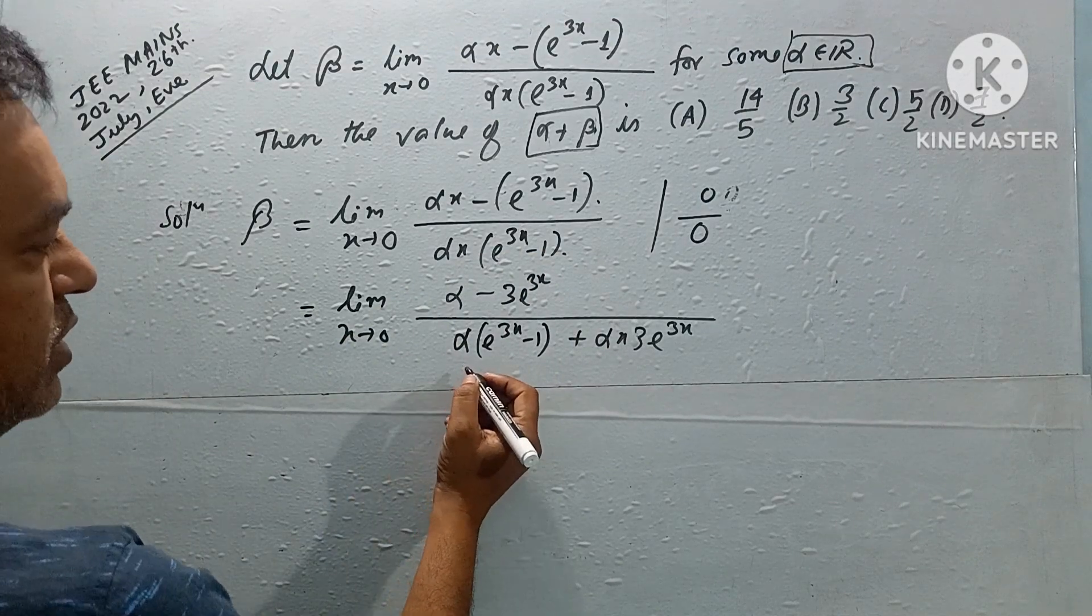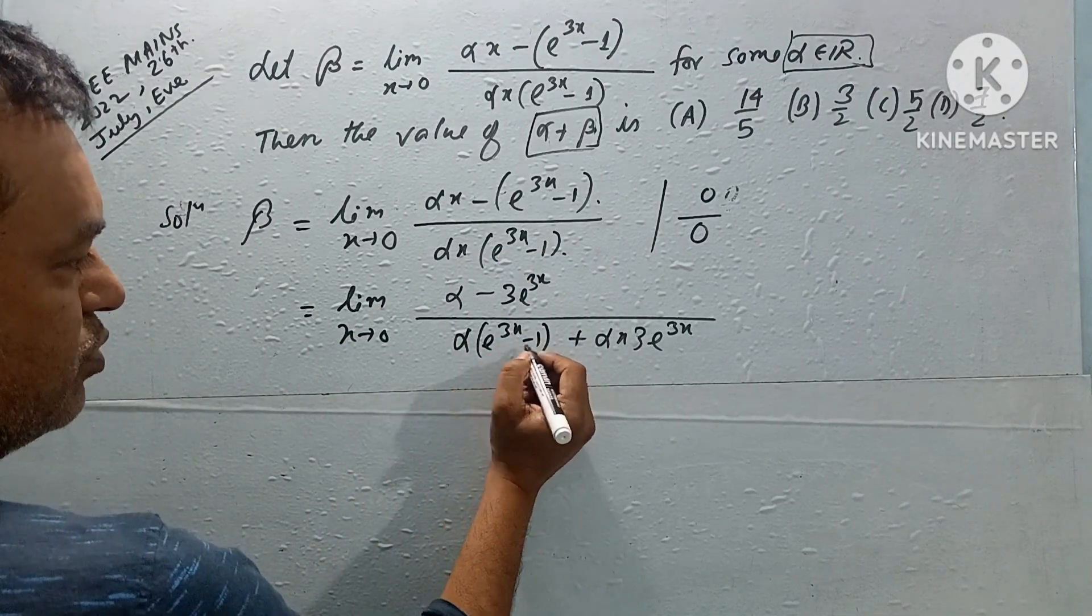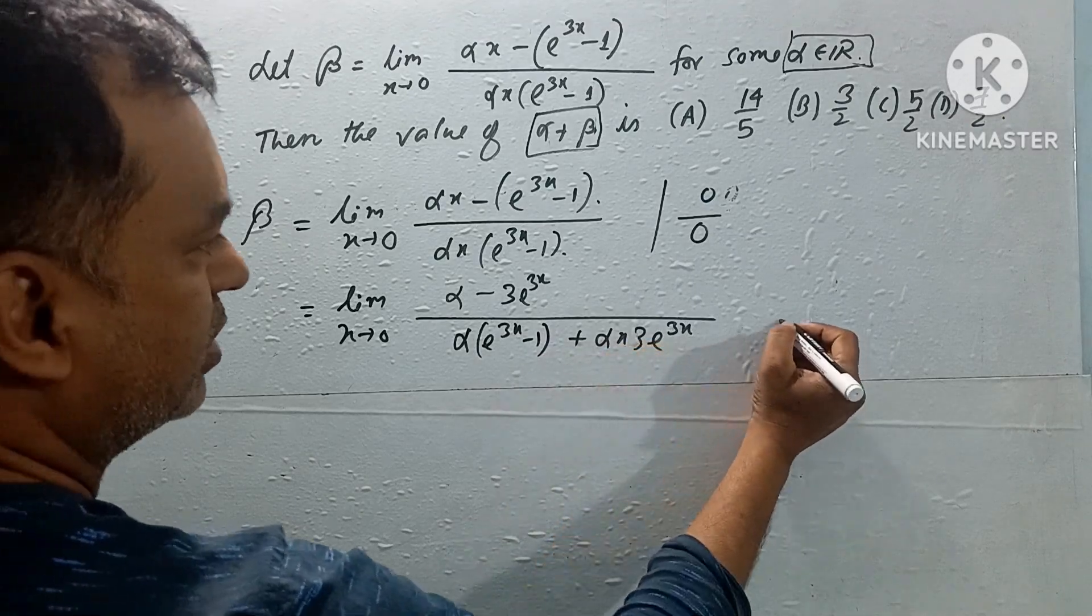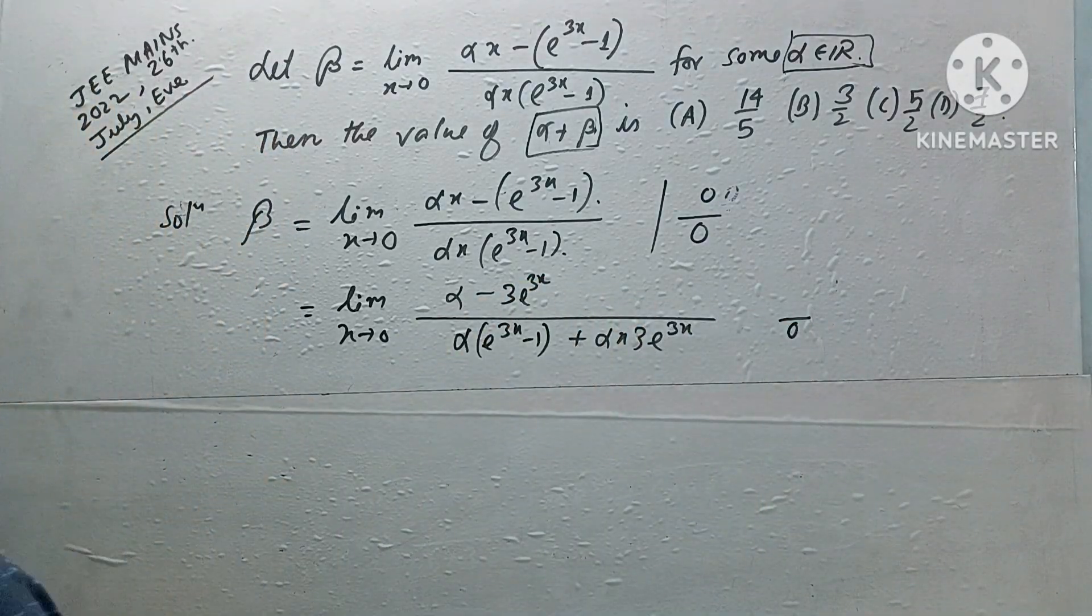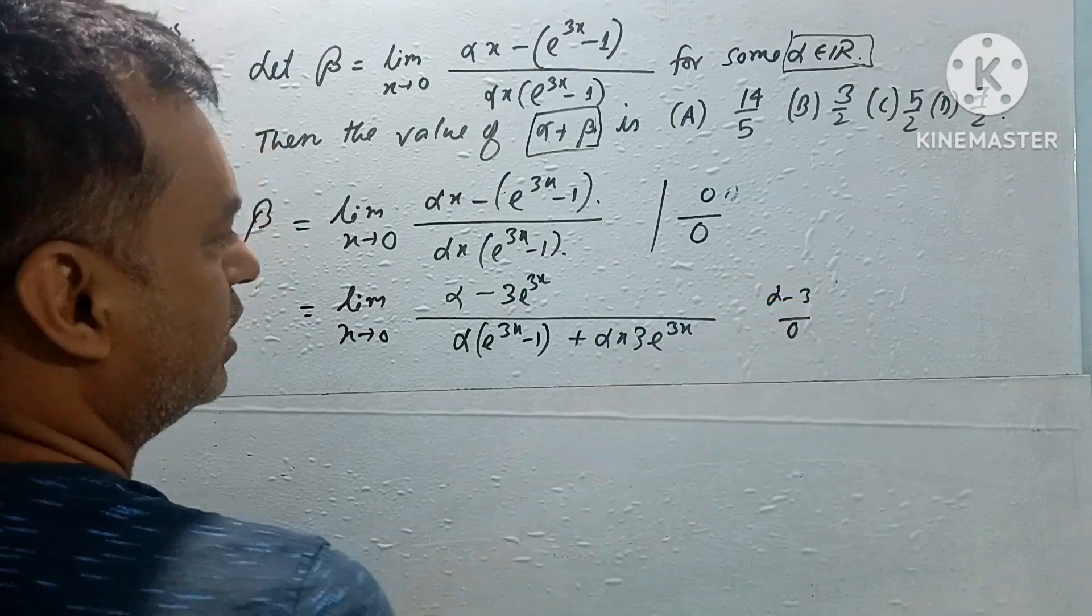Now putting the limit, the denominator becomes one minus one equals zero, so zero. But the numerator becomes alpha minus 3.